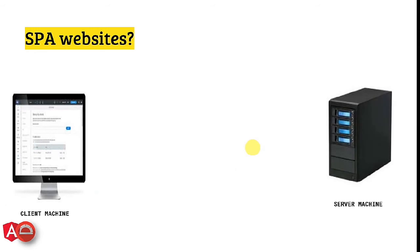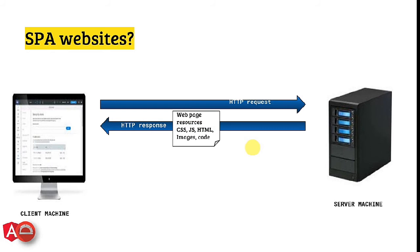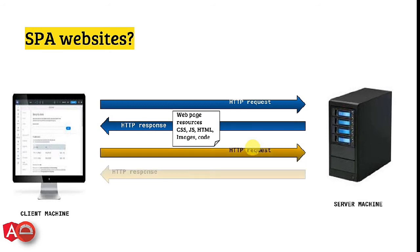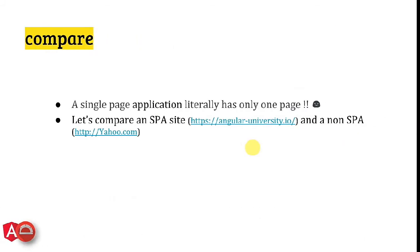Now let's talk about an SPA website. There are two machines: server and client. The client sends a request. For the first time, the server sends all the resources like CSS, JavaScript, HTML, images and other code. But when the user performs certain actions and again sends an HTTP request, the server only sends the additional data and not the full resources. Hence the utilization of resources is efficient and it behaves like a desktop application because only the additional data is loaded and not the full page. A single page application literally has only one page.